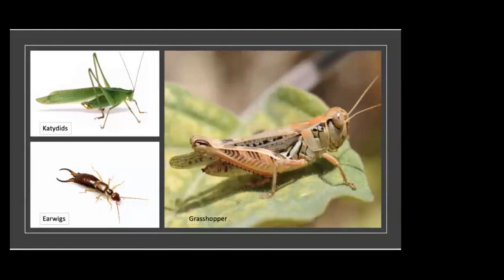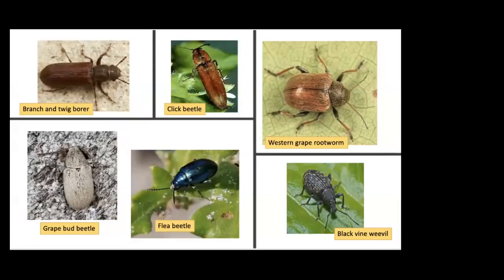Grasshoppers, katydids, and earwigs have chewing mouthparts, so feeding damage results in portions of plants missing. In springtime, grasshoppers can arrive in the vineyard in large numbers when the vines are just beginning to push leaves and eat all the new plant growth. They can also feed on leaves and shoots mid-season. Katydids may occasionally cause damage to ripe berries and leaves. Earwigs like to feed on grapevines in early spring when newly pushed shoots and leaves are present. There are many beetle species — six major ones include branch and twig borer, click beetle, western grape rootworm, black vine weevil, flea beetle, and grape bud beetle. Beetles have chewing mouthparts and undergo complete metamorphosis. Some burrow into grapevines or buds; others feed on leaves or roots as larvae.